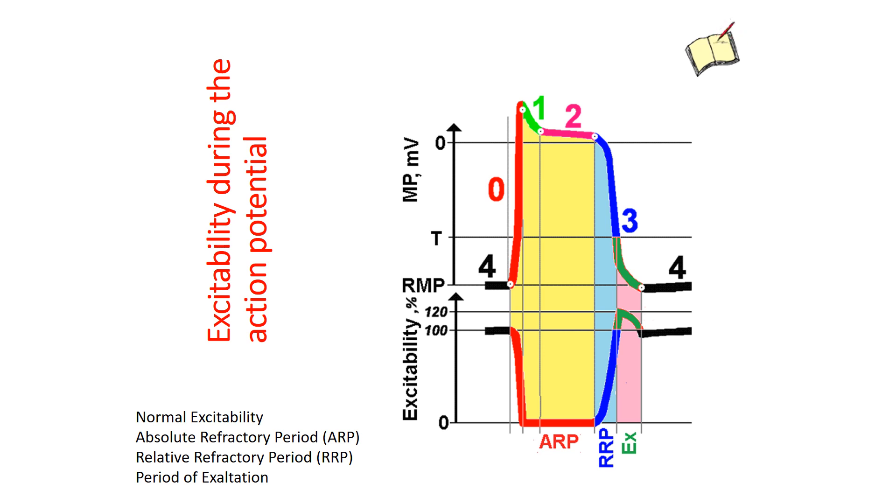The onset of phase 3 to the threshold level corresponds to a relatively refractory period RRP. Blue line on both graphs.